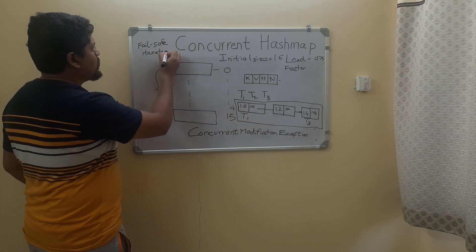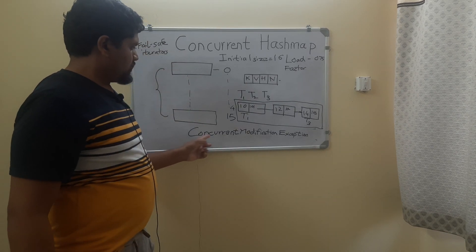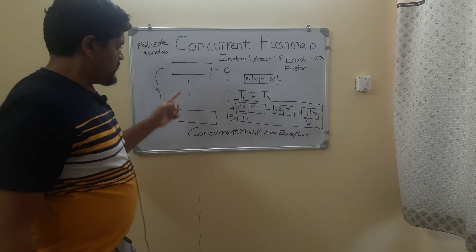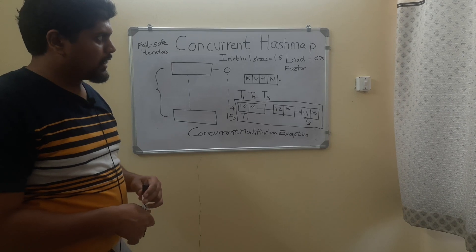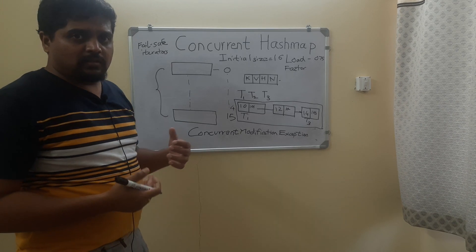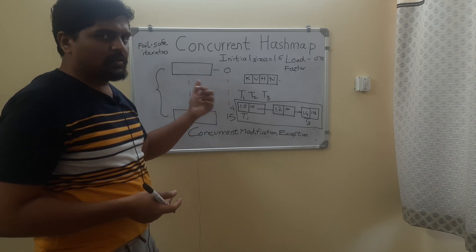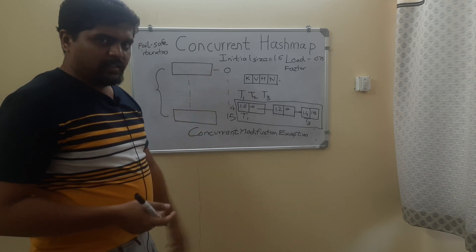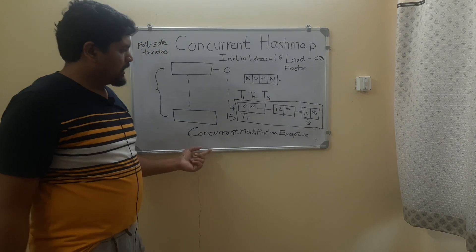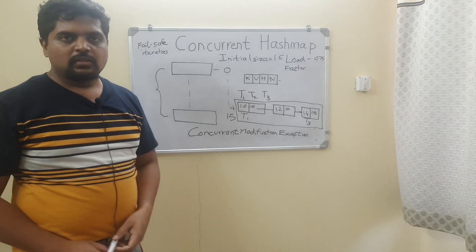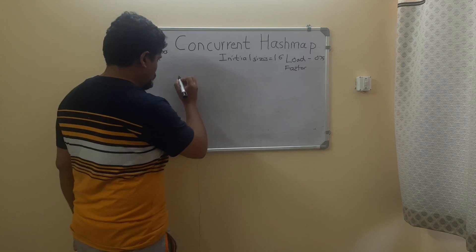ConcurrentHashMap also supports fail-safe iterators. With the help of ConcurrentHashMap you are able to resolve the most important exception — ConcurrentModificationException — which occurs when you try to update or delete a HashMap value while performing other operations like get on it. That is how it helps resolve the ConcurrentModificationException.